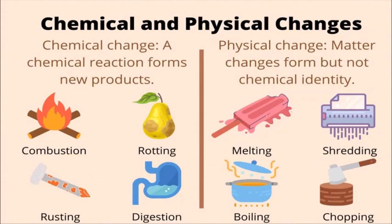Examples of physical changes include evaporation of water, boiling of water, and melting of ice. Examples of chemical changes include burning of wood or paper, souring of milk, digestion of food, and rusting of iron. These occur because of chemical reactions and are irreversible.